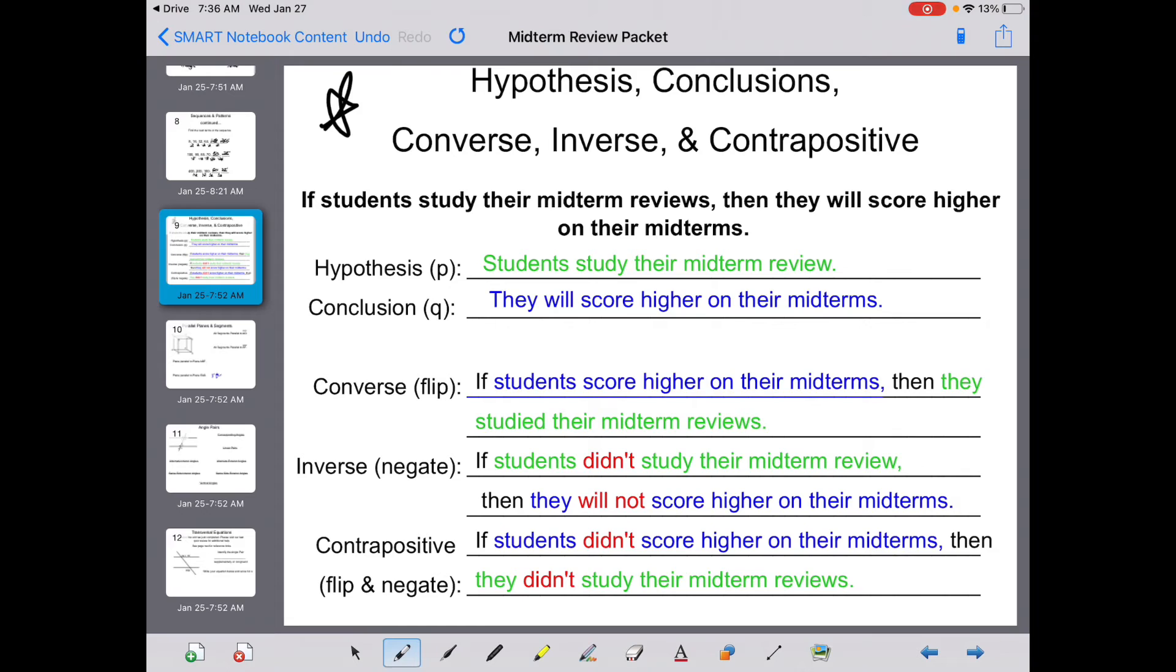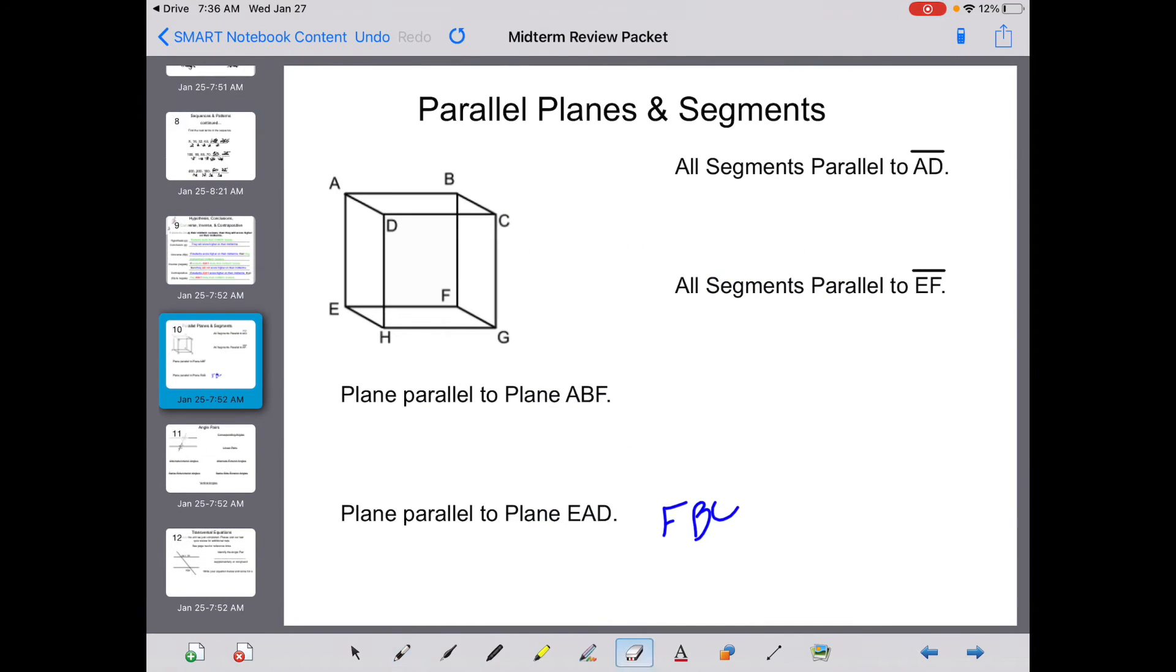This is going to be a part 2. You're going to have to write out sentences given an original conditional. Last section is things that we're pretty familiar with. All segments parallel to AD. This was on our last quiz. So here's AD. BC, FG, and EH are all parallel.